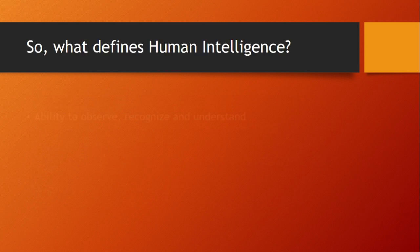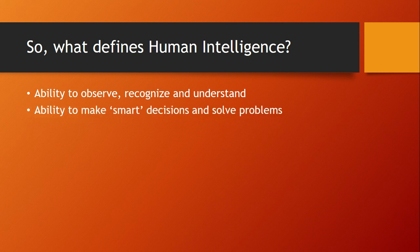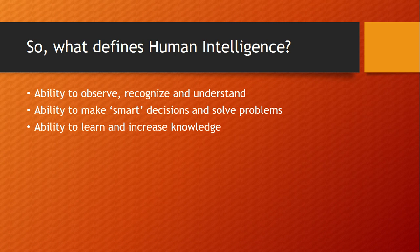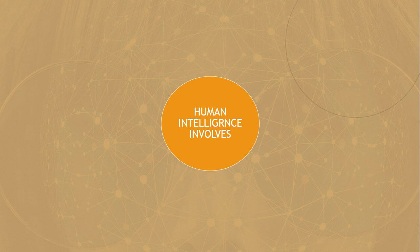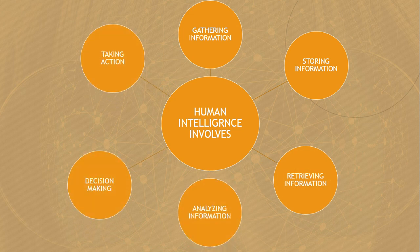So what defines human intelligence? There are three factors. First one is the ability to observe, recognize and understand the things which are around us. Then the ability to make smart decisions and solve problems. And the ability to learn and increase knowledge. So human intelligence involves gathering of information, storing of information, retrieving, analyzing, decision making and taking action on those decisions.